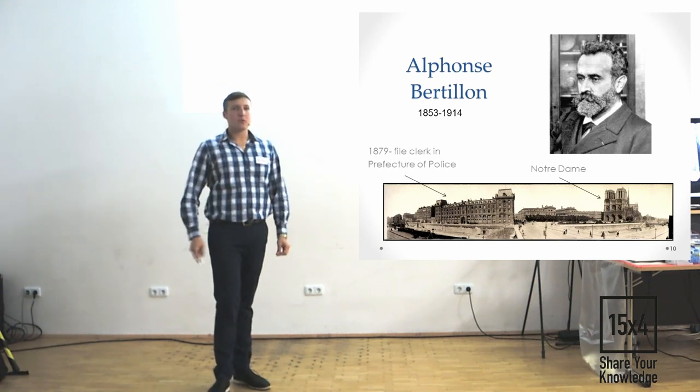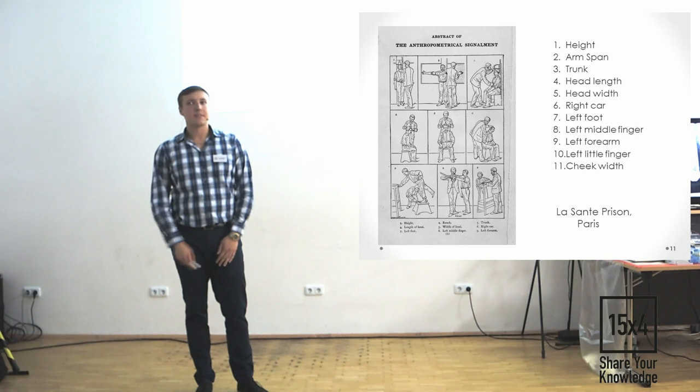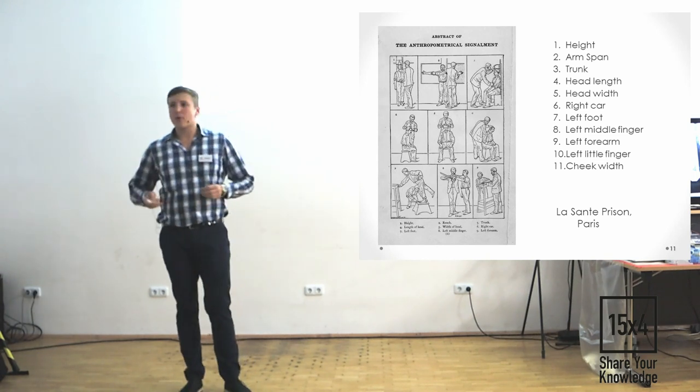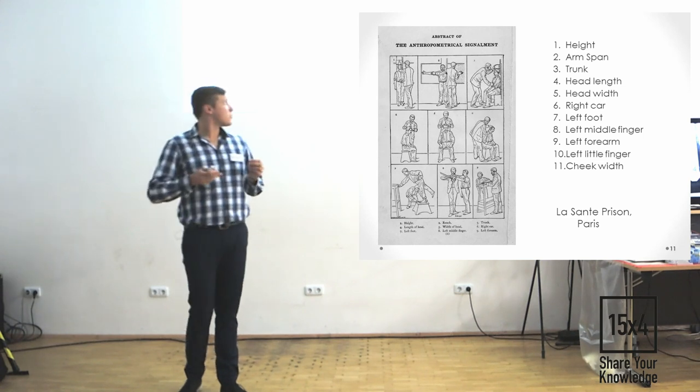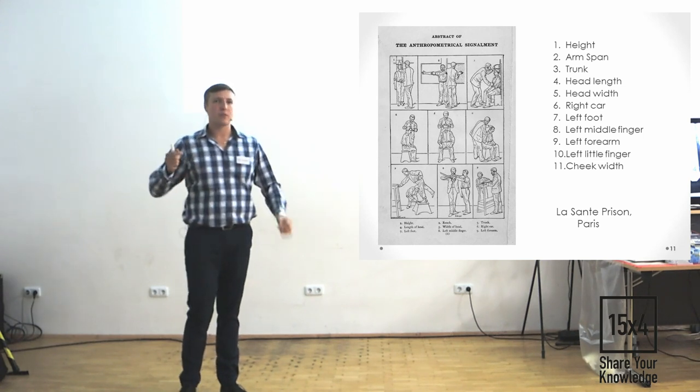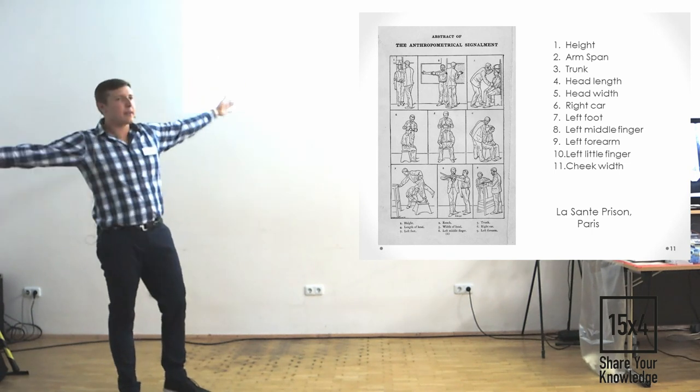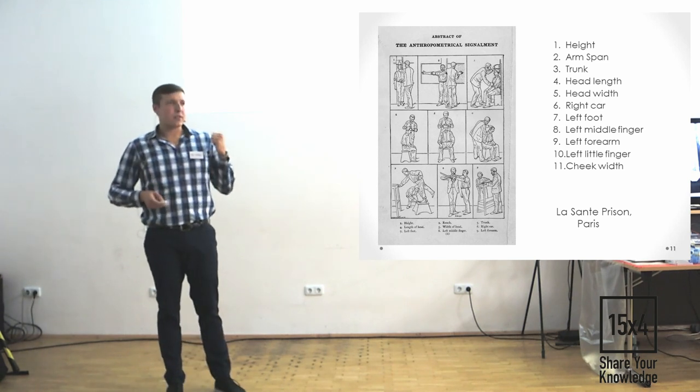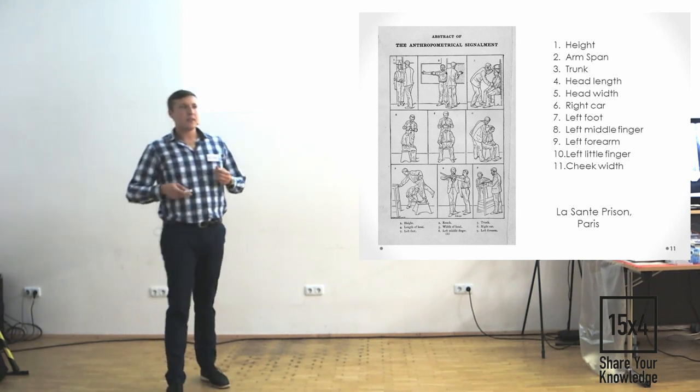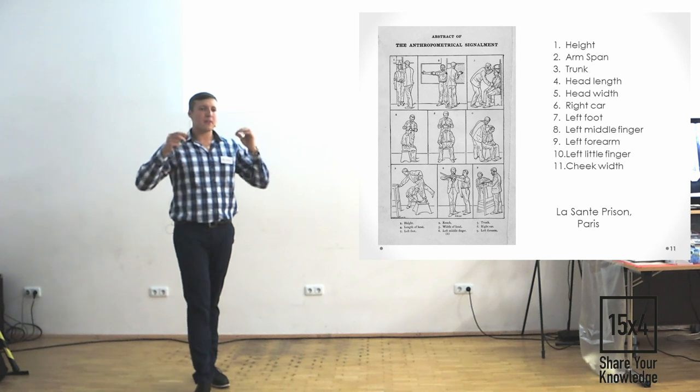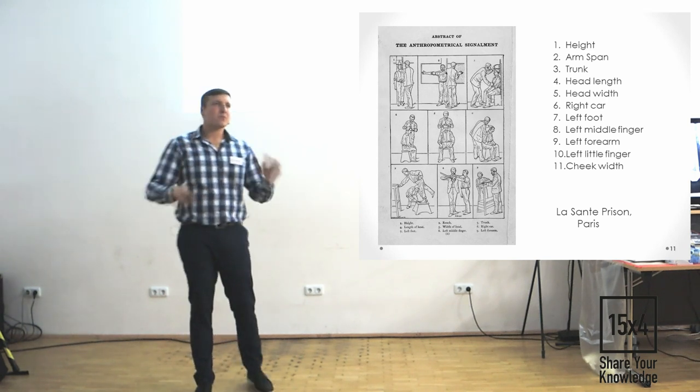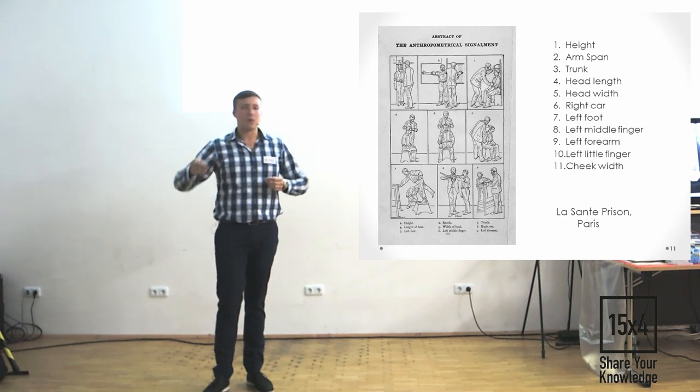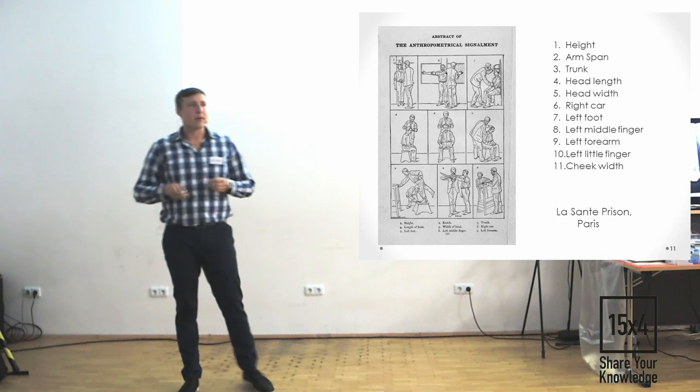And he proposed to use 11 measurements identification system. He thought it would be unlikely for any person to share the sizes of different body parts. For example, like height, arm span, trunk. And he made some measurements in the last 10 prisons a few months later. He came out, but the different people could share different sizes and different parts of bodies. But 4 or 5 or 6 measurements simultaneously never happened.